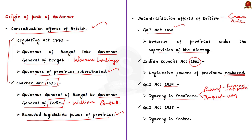Ultimately, diarchy reduced the power of the elected representatives and increased the power of the unelected governor, who was appointed by the Crown. The reforms ended with the Government of India Act 1935, in which diarchy was abolished at the provincial level and finally introduced at the central level. So for around three decades, diarchy was present either at the provincial level or at the central level.